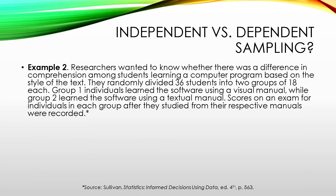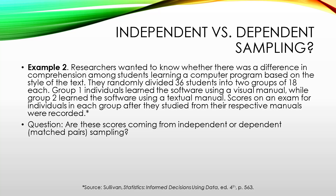Now let's look at a second example. Researchers wanted to know whether there was a difference in comprehension among students learning a computer program based on the style of text. They randomly divided 36 students into two groups of 18. Group 1 learned using a visual interactive manual, while group 2 learned using a traditional text manual. Scores on an exam were recorded after studying. Even though we have equal sample sizes of 18, there's no connection between the two groups — it's not one person measured twice, and people were not paired before the study. So these are independent samples.